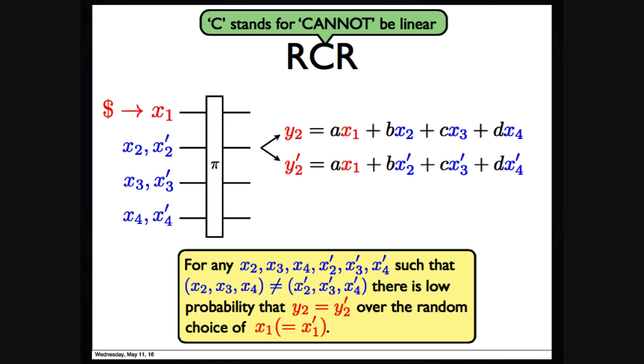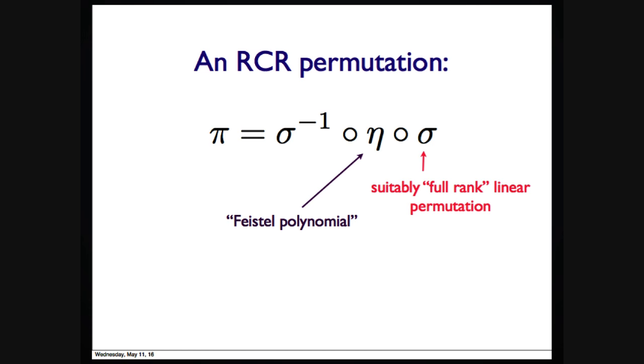Say π is a linear permutation. Then Y2 should be a linear combination of its input, like A times X1 plus B times X2, etc. So is Y2'. Then you could easily find some blue values such that in those two equations, the blue part equals. Thus, despite how you randomly chose X1, Y2 equals Y2' with probability 1. Thus, it cannot be RCR. There is a special case when W equals 2, but I don't really want to discuss it.